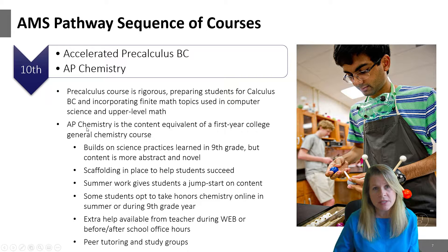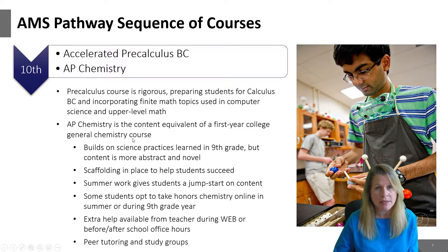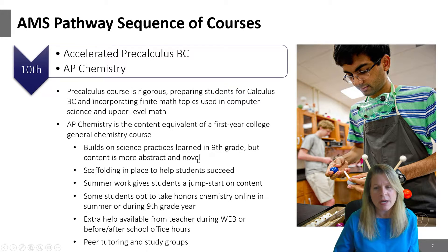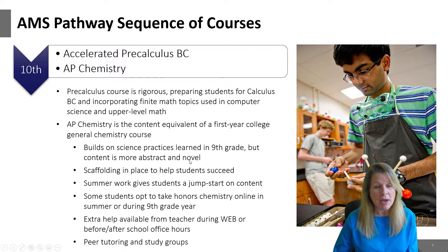The science class you're going to take in tenth grade is AP Chemistry. This is the content equivalent of a first-year college class in chemistry. It's going to build on those science practices you develop in AP Environmental Science, but the content in AP Chemistry is going to be a little bit more abstract and novel. This is sometimes the first class that AMS students encounter that gives them their first little bit of difficulty in science — they may have breezed through science before, but this is the first one with brand-new content and you really have to apply yourself.